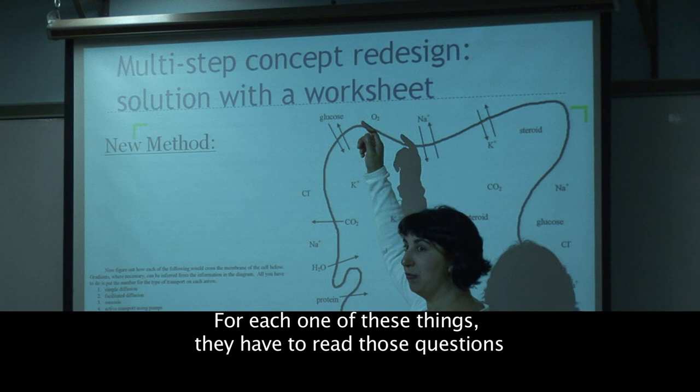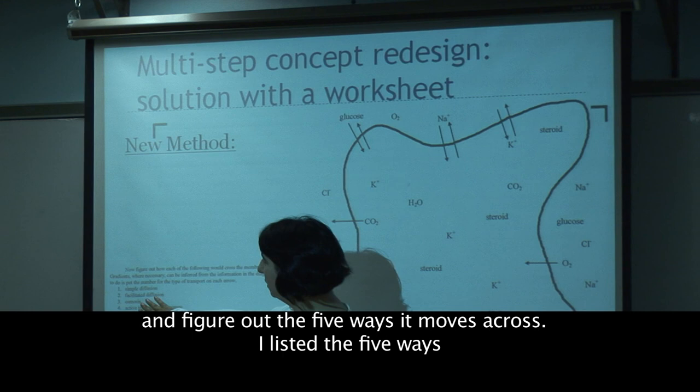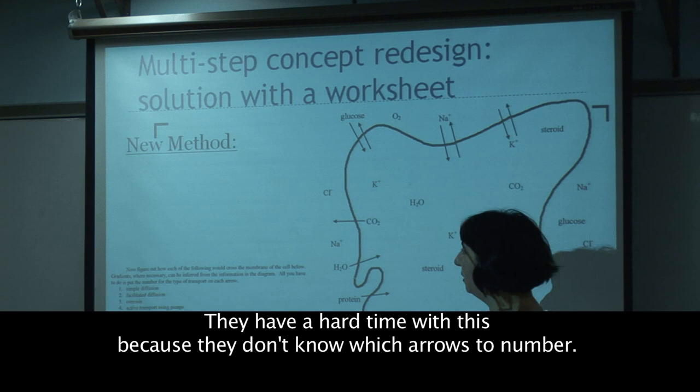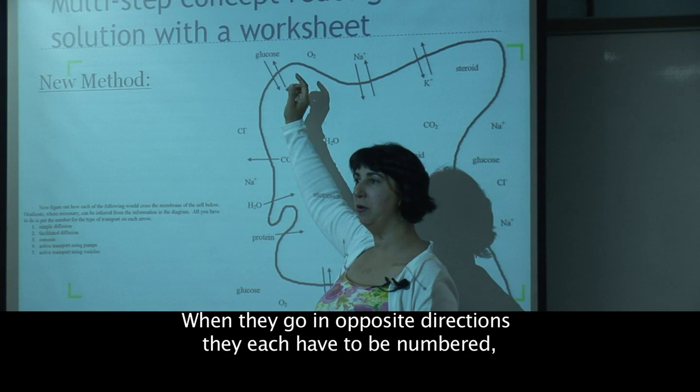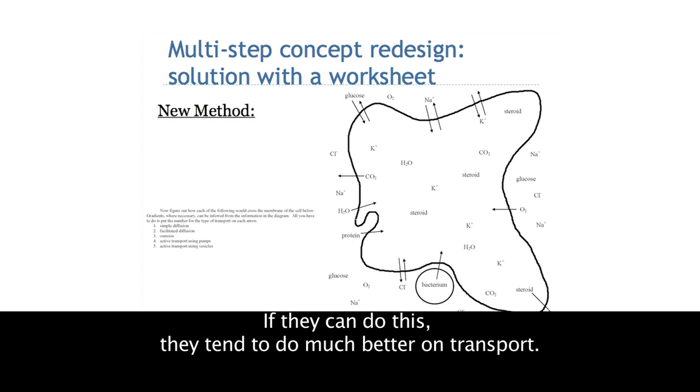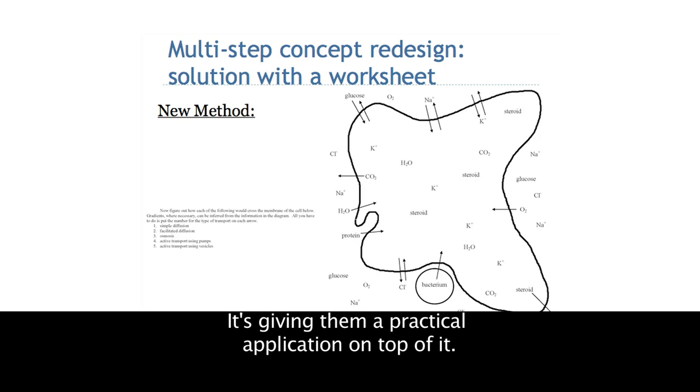For each one of these things, they have to read those questions and figure out which of the five ways it moves across — and I list the five ways, although it's small here. Then they just put the number on the arrow. They have a hard time with this because they don't know which arrows to number, or if they number every one, or when they go in opposite directions that each has to be numbered. But you can eventually work through it with them, and if they can do this, they tend to do much better on transport.